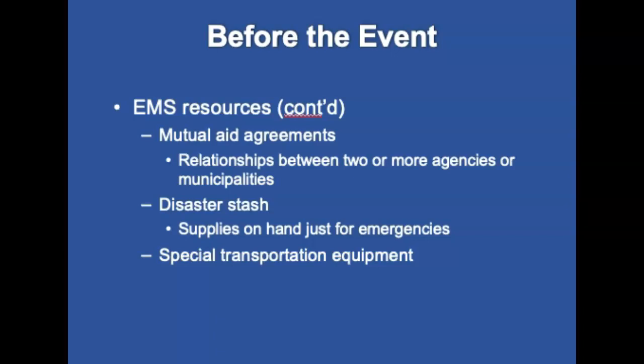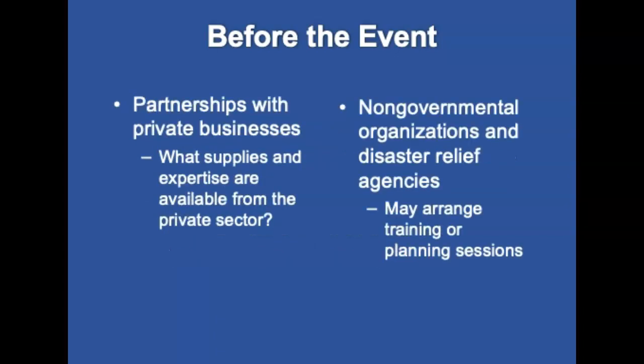Agencies might have mutual aid agreements, also known as automatic aid agreements. Agencies may have disaster stashes — supplies kept on hand for emergencies with an up-to-date inventory. Agencies may also have access to special transportation equipment. In the event of GPS loss or satellite connection failure, paper maps and lap maps may be needed. Partnerships with private businesses can provide supplies and expertise. Non-governmental organizations and disaster relief agencies, such as the Salvation Army and Red Cross, may also assist.